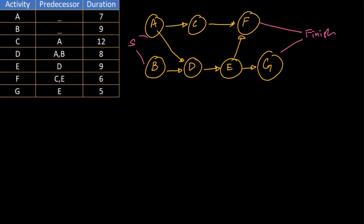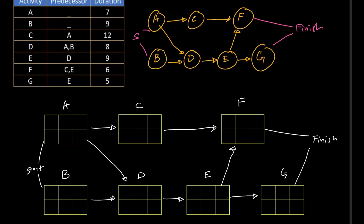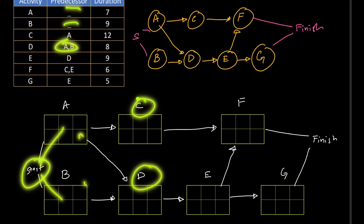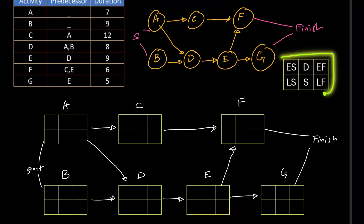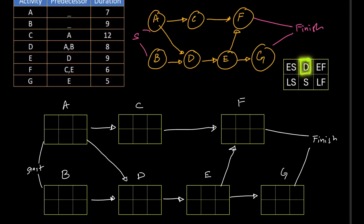Now we need to make a detailed box diagram. We have labeled the CPM box diagram and copied the structure to a detailed version where the boxes are not filled yet. The project starts simultaneously with A and B, both having no predecessors. D starts after finishing A and B; C starts after the completion of A. The format for labeling the box: duration on the upper middle, slack on the lower middle, early start, early finish, late start, and late finish. The easiest step is to label the durations — A has a duration of 7, B has a duration of 9.